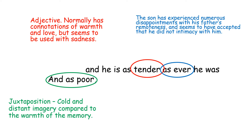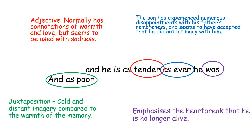When the poet uses the words he was, that is deliberately used in the past tense and I think that's supposed to show more of an emphasis that the heartbreak — that he is no longer alive — can never be changed. He's incredibly disappointed that his father is no longer there, whilst also being disappointed that his father wasn't there when he was alive either.